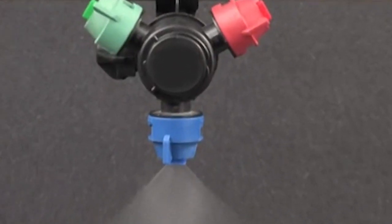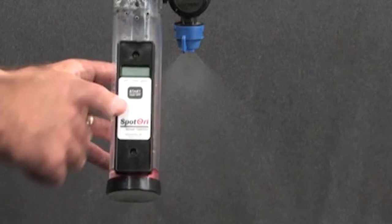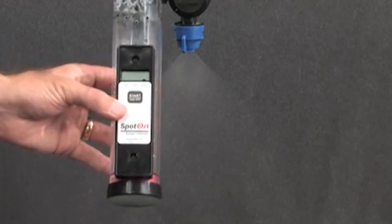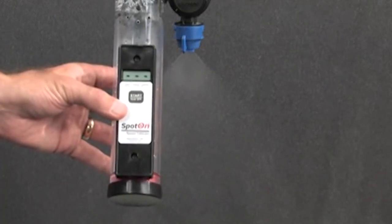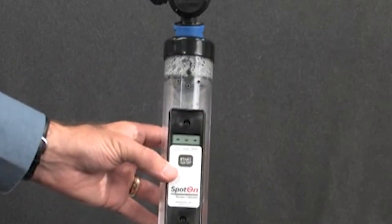The SpotOn Sprayer Calibrator is very easy to use. Just turn it on, wait for dashes on the display, then place it under the nozzle's flow until the flow rate is displayed.